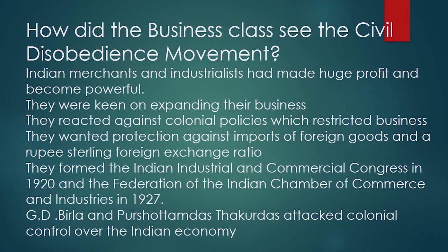How did the business class see the Civil Disobedience Movement? They were traders and industrialists who wanted their businesses to expand and their policies to be favorable. They wanted protection from foreign goods. That is why they formed the Indian Industrial and Commercial Congress in 1920, and the Federation of Indian Chamber of Commerce and Industries in 1927. A one-mark question: name the organizations formed by industrialists during the Freedom Struggle Movement.